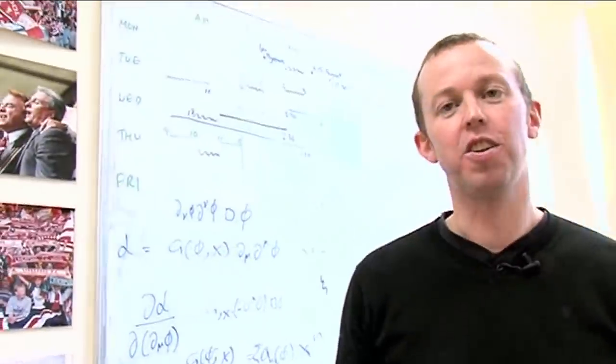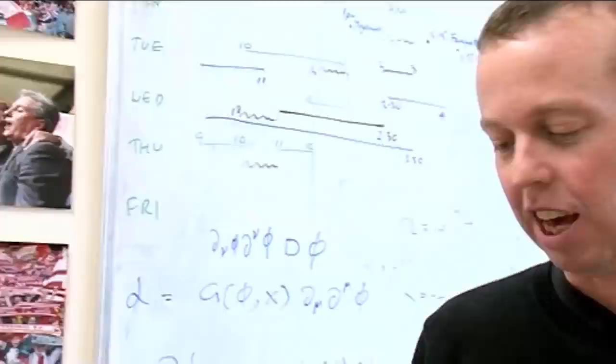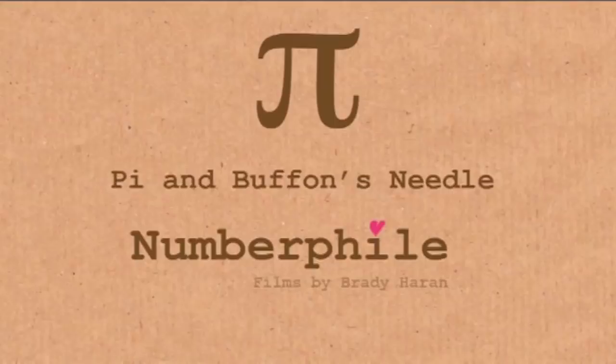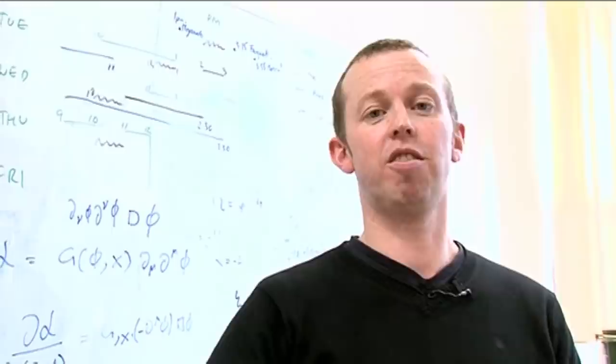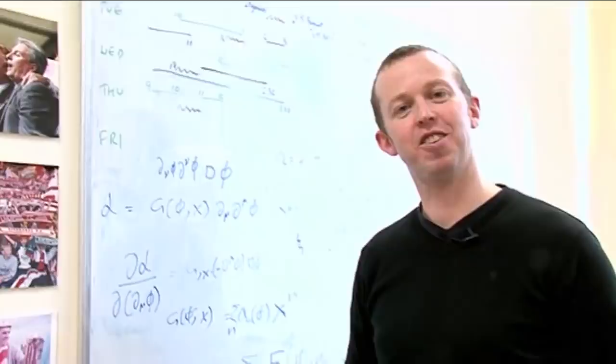We're going to do Buffon's needle trick. This is named after Georges-Louis Leclerc. This is a method that he proposed for working out pi. Basically, he proposed that you would chuck a bunch of needles randomly on a floor. You can work out pi from that due to the random nature.